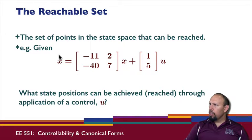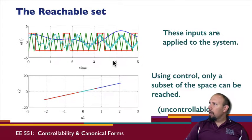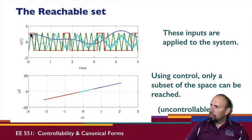The reachable set is the set of points in the state space that can be reached. For example, here I have this system. What state positions can be reached through application of some control signal U? By way of example, here are some signals that are applied to the system. In this case, we are applying signals that are bounded by magnitude two, looks like two and a half.